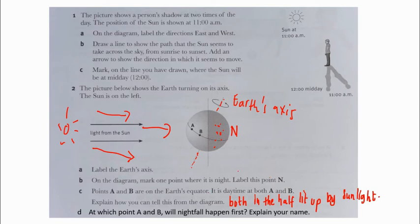Part D: At which point, A or B, will nightfall happen first? Explain your answer. I don't use left or right when talking about Earth's rotation, but I will use clockwise or counterclockwise. The Earth's rotation is counterclockwise, so it's turning to the left.